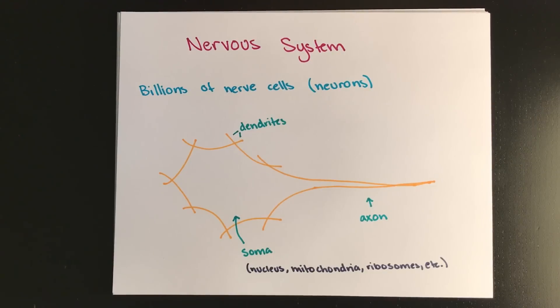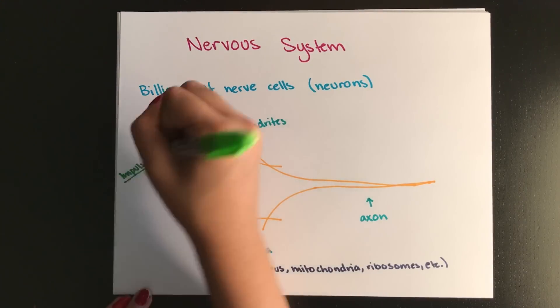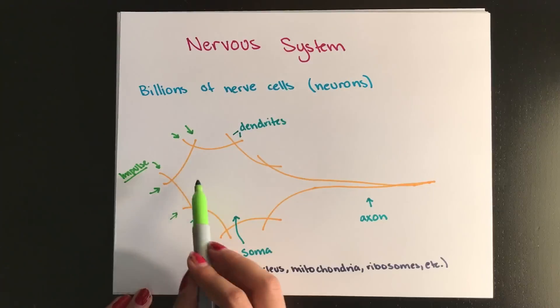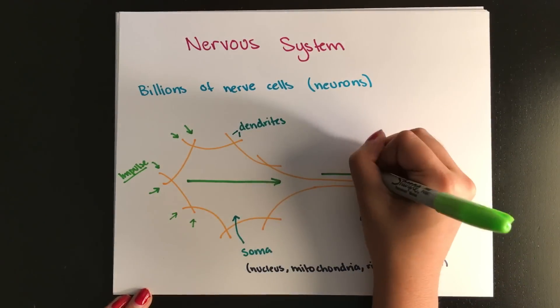The processes or extensions, these are technical terms for those weird little branches that come out of the cell body, those are called dendrites. And the axon is that one long guy. Usually neurons only have one axon, but a bunch of dendrites. A neuron will receive its impulse from the dendrites and transmit it through the axon. So impulses usually go in one way.